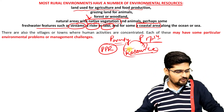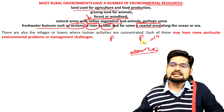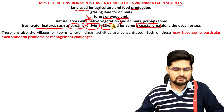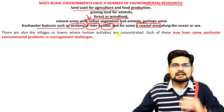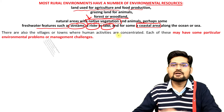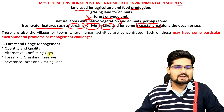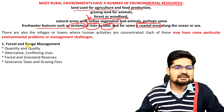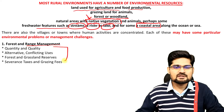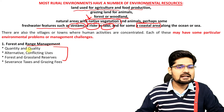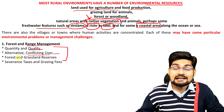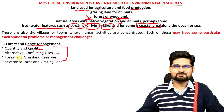If you want to understand the challenges in rural areas, we can figure them out under certain headings. The first one is forest and range management. The issues here involve quantity and quality — both alternating and conflicting issues. Forest and grassland reserves are under threat, and severance taxes and grazing fees are applied in certain pockets of the world.